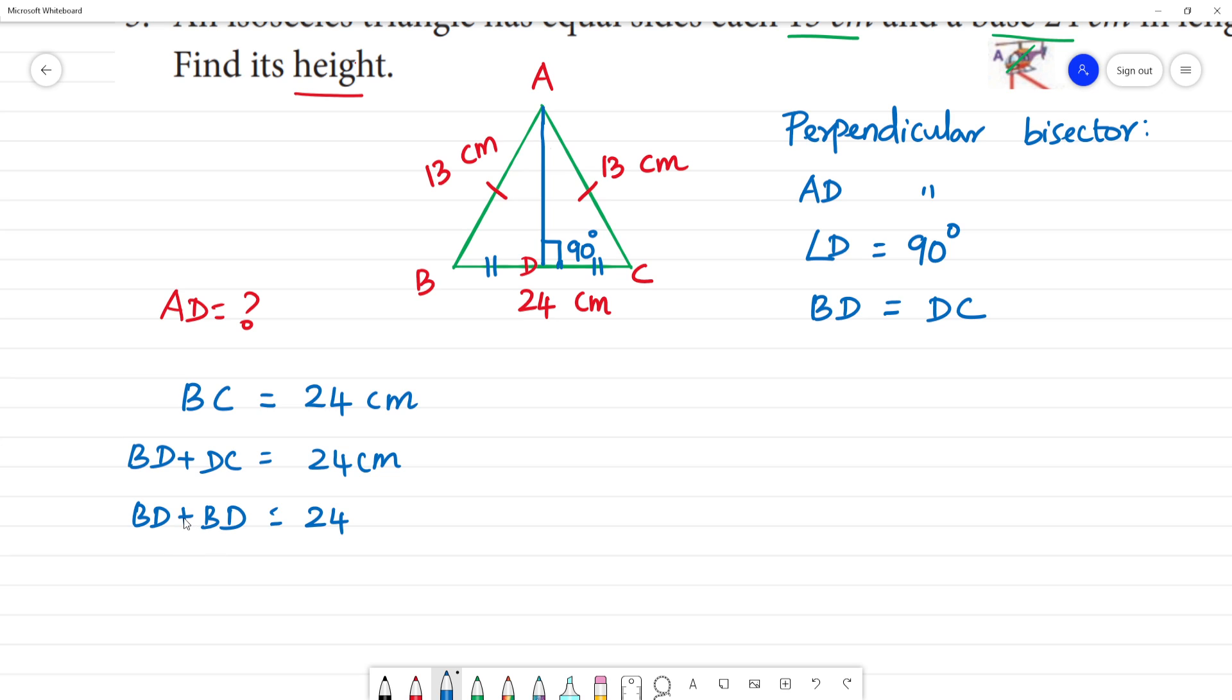2BD equal to 24. Then BD is 24 by 2. BD will be 12 cm.